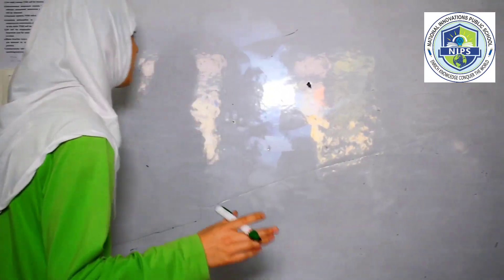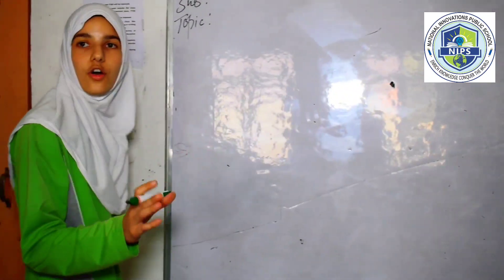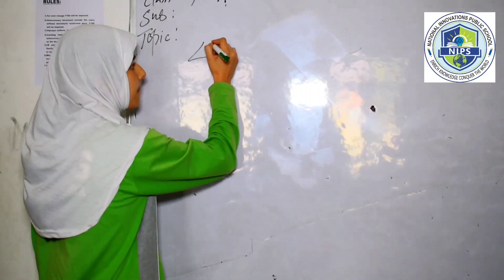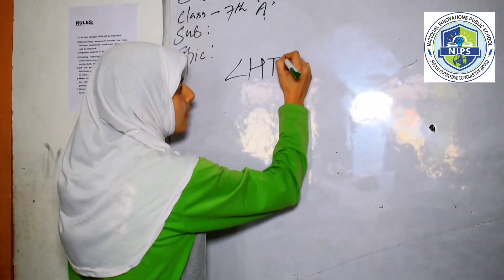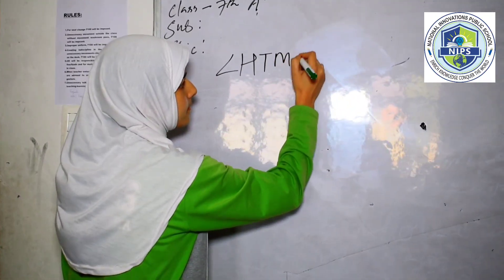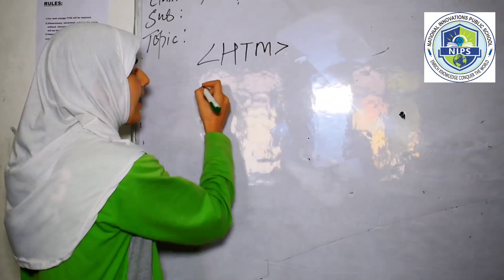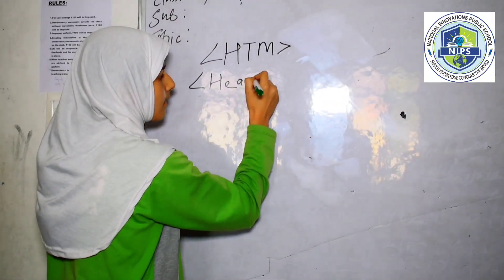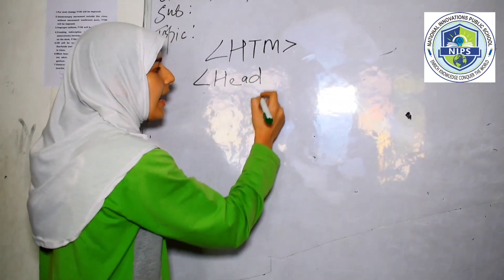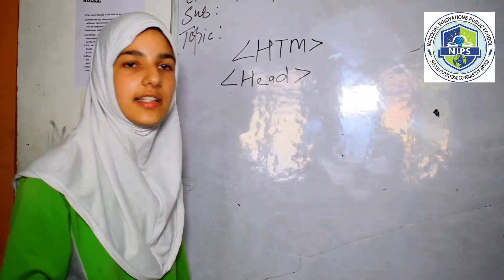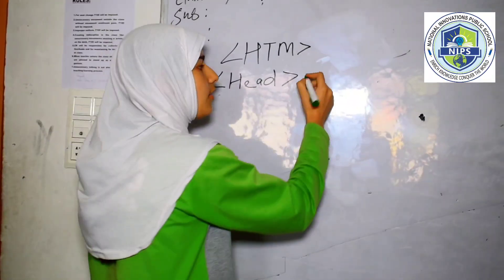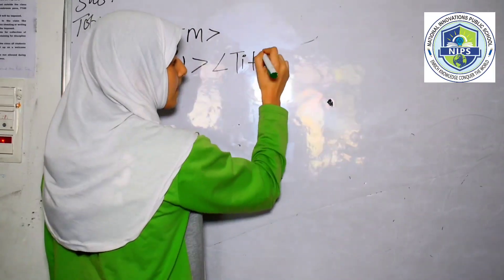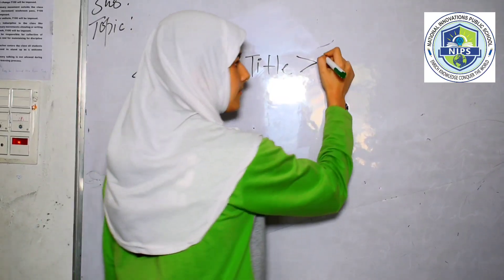Now, let's start creating our table. First of all, we have to write the HTML tag. And then after that, the head tag. In the head tag, we can also give our title — like I will give here 'table'.